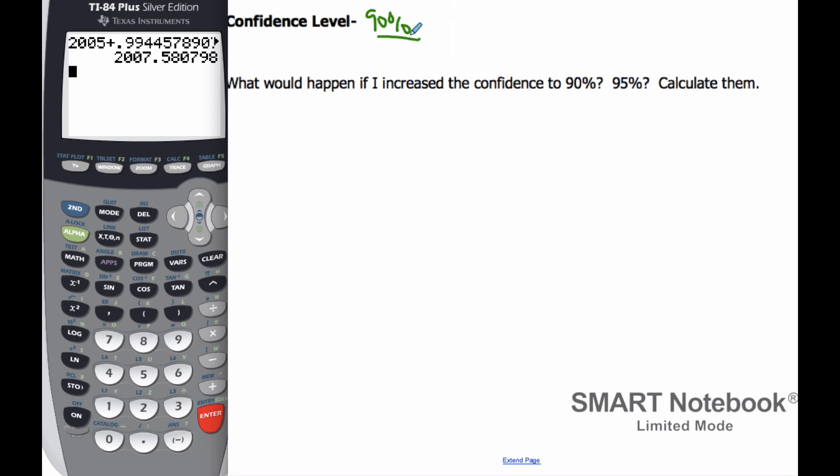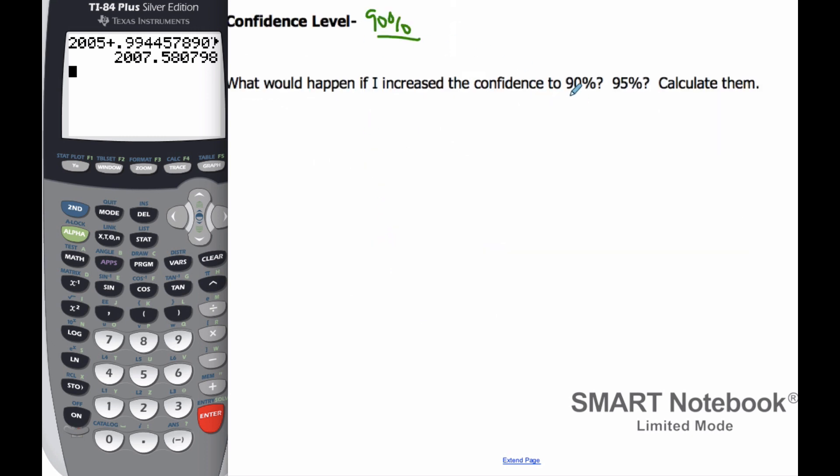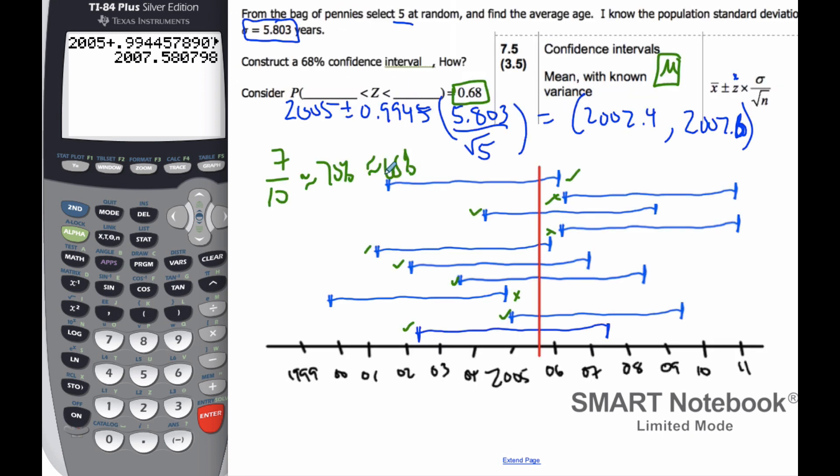So then, what actually happens to this confidence interval if I would come along and then make a 90% confidence? What's going to happen to my interval? Or if it's 95%? Well, think about what that actually means. If you want to be more sure of capturing the true value, what effect is that going to have on this?